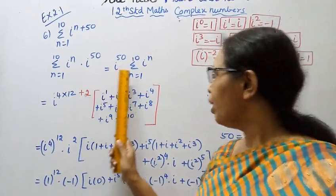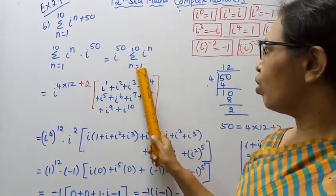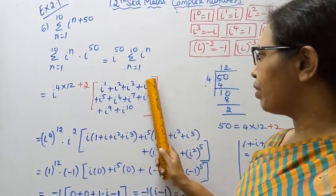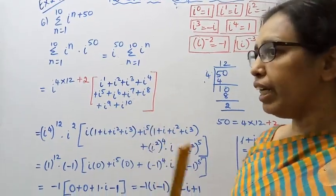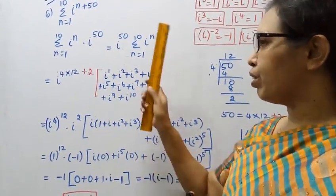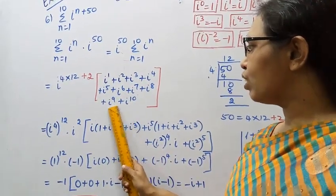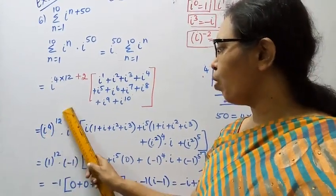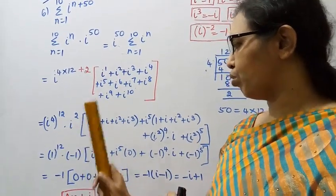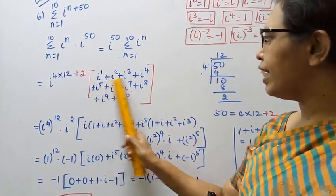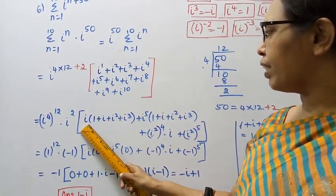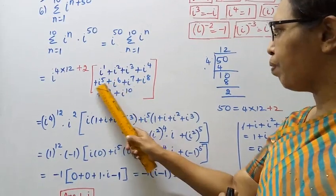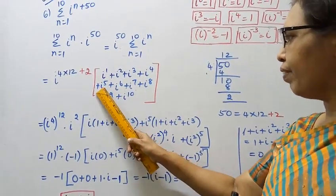i power N, n equal to 1 to 10: i power 1, i power 3, i power 5, 6, 7, 8, 9, 10. i power 4 into 4, first 4, second 4. i power N, i power 4, i power 2, i power 2, i power 1, i power 1, i power 4, i power 4, i power 3.